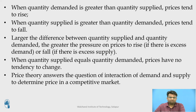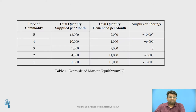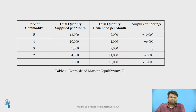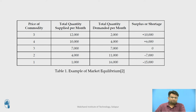The price theory answers questions about the interaction of demand and supply to determine price in a competitive market. Looking at the example given in the table, at the price of 3 units, only at this price is the quantity producers are willing to supply identical to the amount customers are willing to pay. As a result, there is neither a shortage nor a surplus of supply X at this price. A surplus causes the price to decline and a shortage causes the price to rise. With neither shortage nor surplus at unit 3, there is no reason for the actual price of commodity X to move from this price. This price is called the equilibrium price.